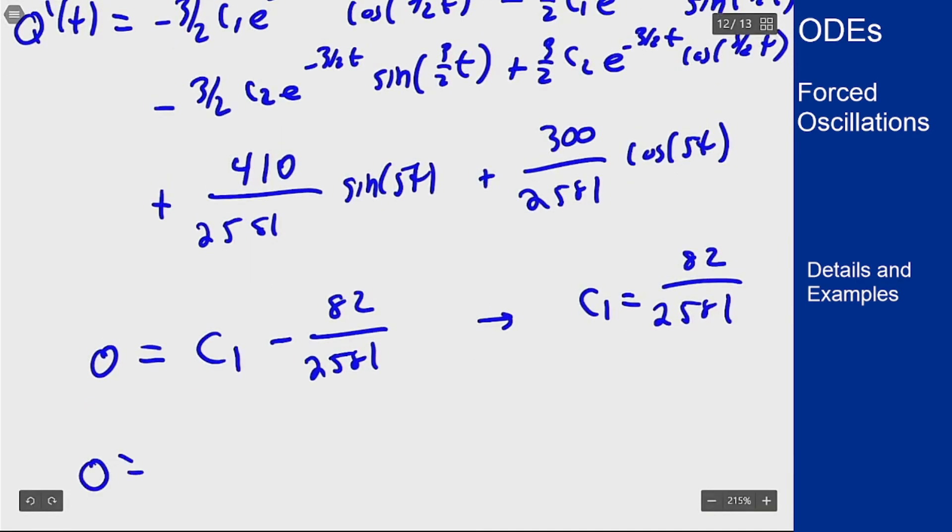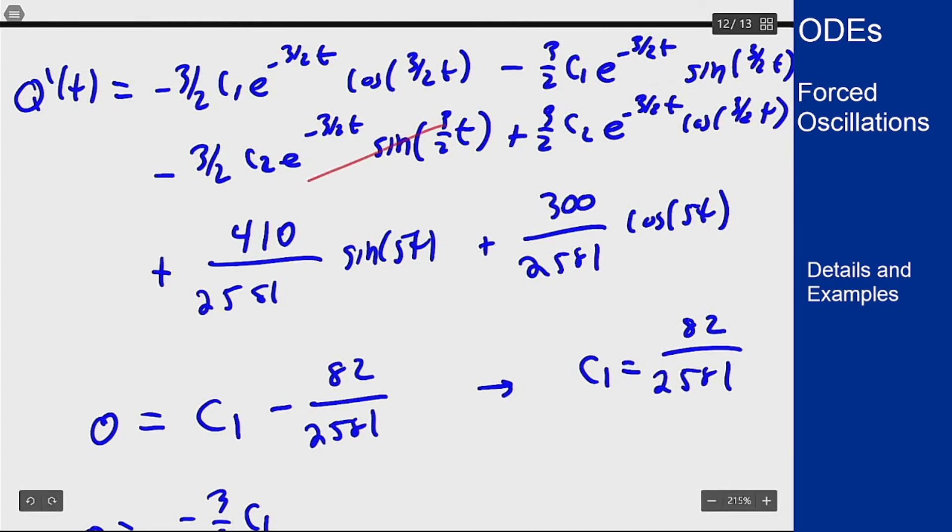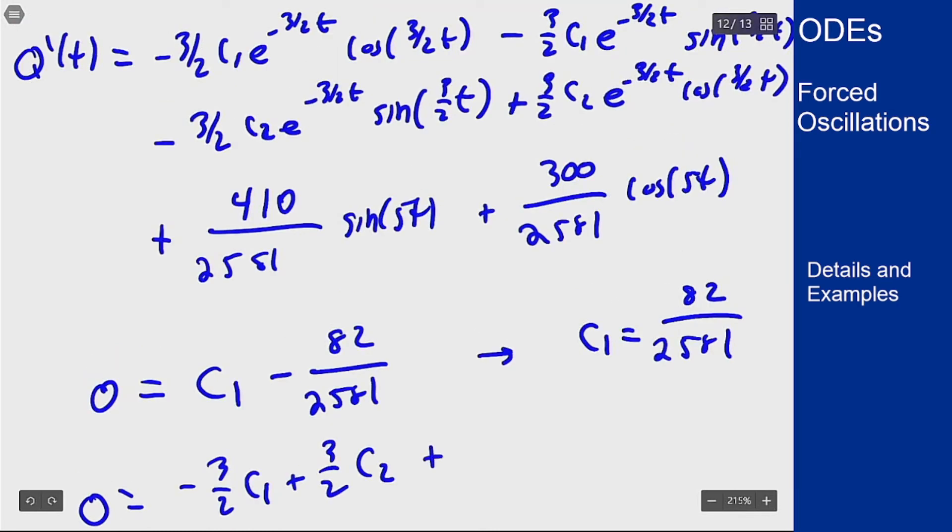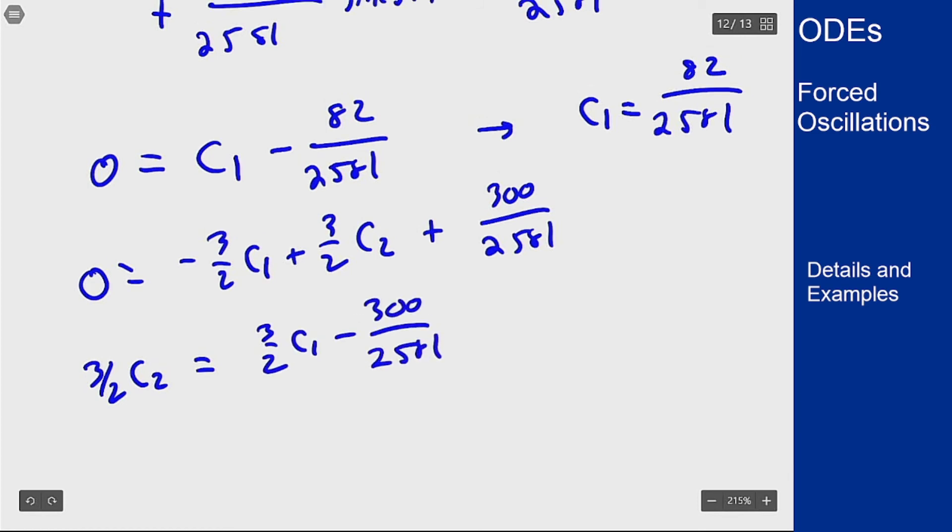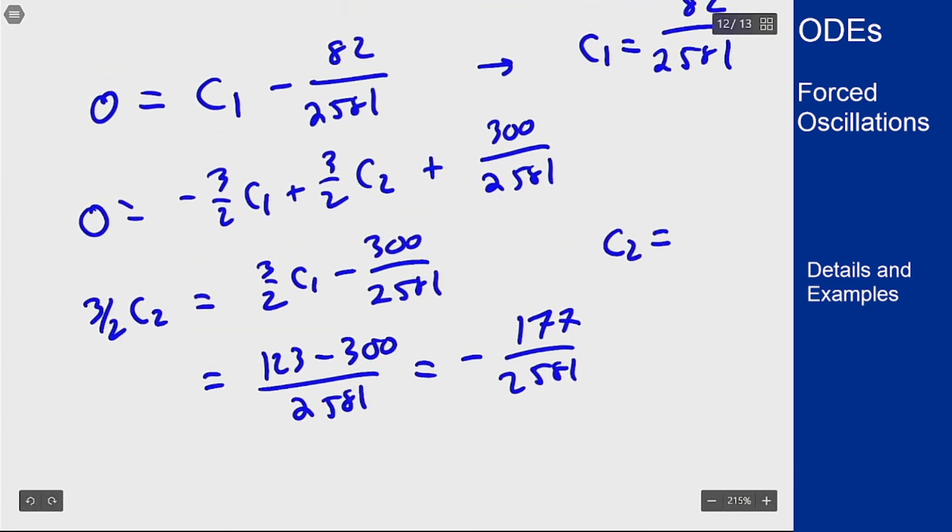For q prime, I get that 0 should equal negative 3/2 c1, the sine terms go away, the cosine survives plus 3/2 c2, and then the cosine term in the non-homogeneous part survives, so 300 over 2581. I know what c1 is already, so 3/2 c2 should equal 3/2 c1 minus 300 over 2581. 3/2 c1 will be 123 over 2581. 123 minus 300 over 2581 gives me negative 177 over 2581. Dividing that by 3 and multiplying by 2 tells me that c2 must be negative 118 over 2581.